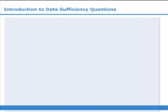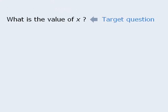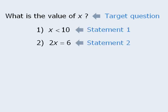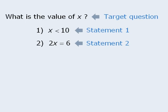Let's take a look at a typical data sufficiency question. First, we have a target question. The target question on its own will never contain enough information to answer. In this particular case, it's obvious that we cannot say what the value of x is, since we have no information. Next we have two statements — statement 1 and statement 2. These statements may or may not provide the information required to answer the target question.